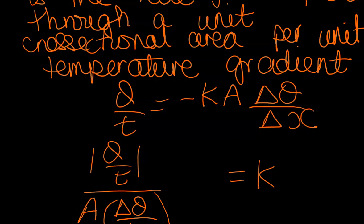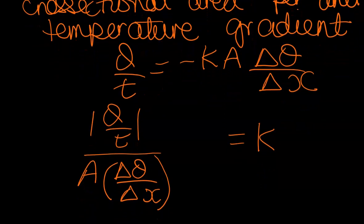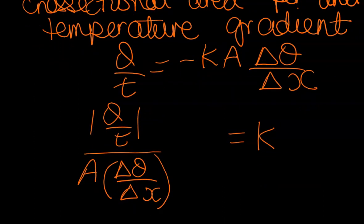Now if you wanted to make K the subject, I use the modulus. The negative sign here is just representative that heat flows from a region of higher to lower temperature. So you are flowing from a higher to a lower temperature, therefore you have a negative gradient. But in your calculation, you use the modulus, so you don't have to include a negative sign in your calculation.